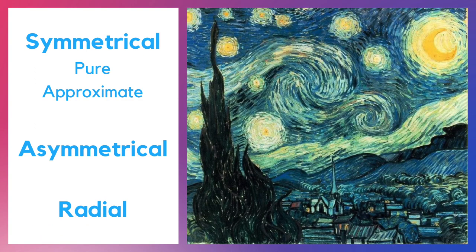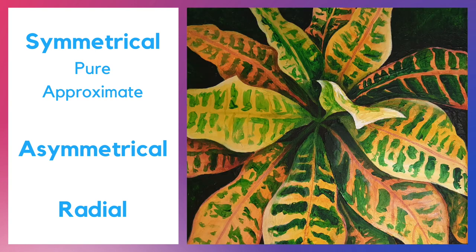The Starry Night by Vincent van Gogh uses a similar approach. Can you tell what type of balance is used here? It's radial balance, because the leaves emerge from the center and go outward in all directions.